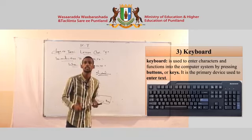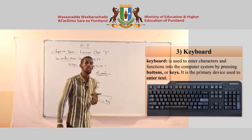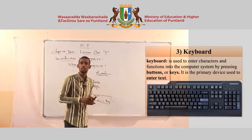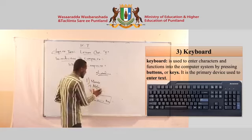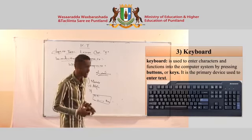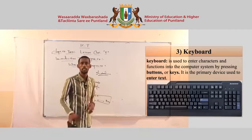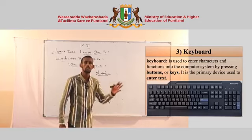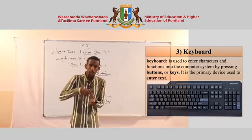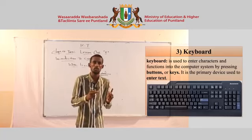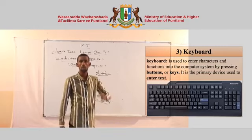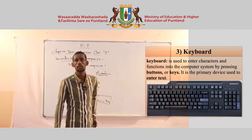The keyboard is used to enter characters. You press a letter to write letters such as A, B, C, D, and numbers such as 1, 2, 3, 4, 5. There are also special keys. The keyboard is the primary device used to enter characters into the computer.